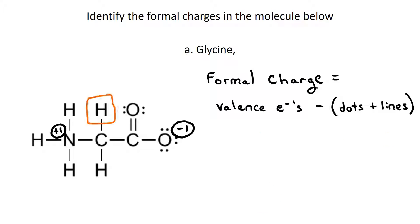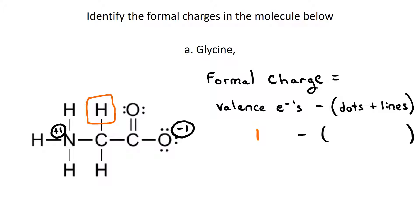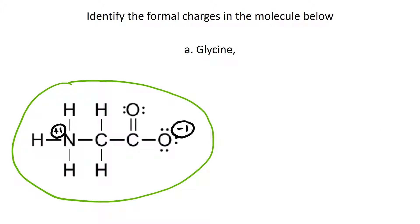Last but not least, hydrogen. Hydrogen is in column 1A, so it has one valence electron. There are no dots around that hydrogen and one line. So the formula for formal charge gives us one minus one, or zero charge. All the other hydrogens in the molecule are in the same case — no lone pairs and one bond — so they all have a zero charge. Those are all the formal charges on the amino acid glycine. If you're interested in what that molecule looks like three-dimensionally, it would look like this.